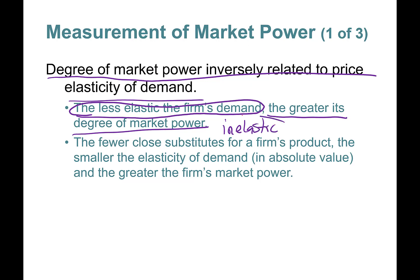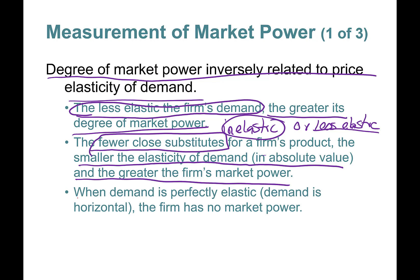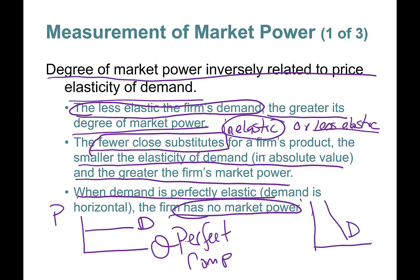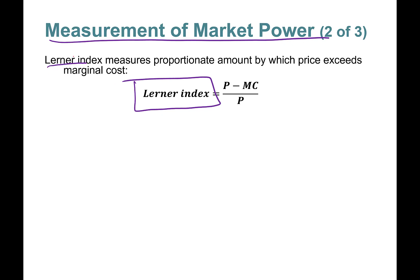Less elastic demand means there are fewer close substitutes — you don't want consumers substituting away from your good. The smaller the elasticity in absolute value, the greater your market power. When demand is perfectly elastic, the demand curve is horizontal — that means no market power, which happens under perfect competition. A steeper, downward-sloping demand curve indicates more market power.